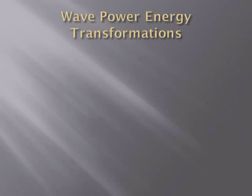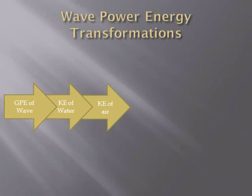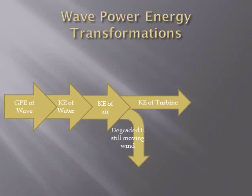Now that we know how an oscillating water column works, let's go over the actual calculations for wave energy. The gravitational energy of the wave gives the water kinetic energy, lifting the water in the oscillating column up. The water moving up pushes the air, giving it kinetic energy. The air then spins the turbine, and that turbine spinning will generate electricity in the generator.